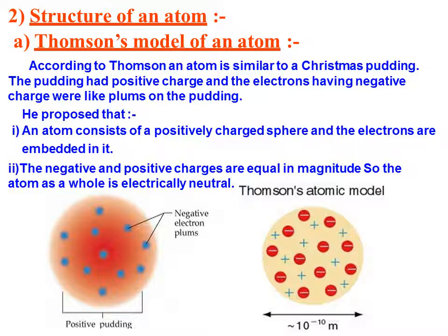Thomson model of an atom: according to Thomson, an atom is similar to a Christmas pudding. The pudding has positive charge and the electrons having negative charge were like plums on the pudding. He proposed that an atom consists of a positively charged sphere and the electrons are embedded in it. The negative and positive charges are equal in magnitude, so the atom as a whole is electrically neutral.